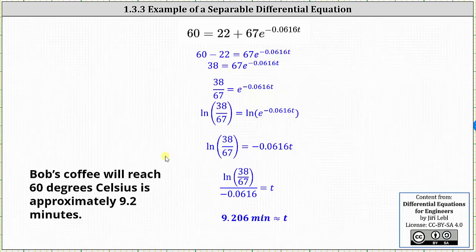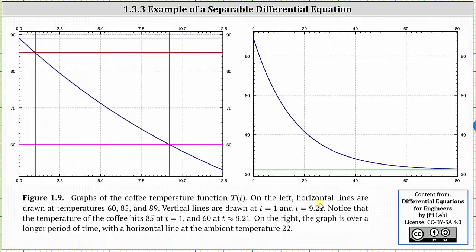Before we go, let's also look at this graphically. In both graphs, the dark blue function is the temperature function big T of t. On the left, horizontal lines are drawn at 60 degrees in pink, 85 degrees in brown, and 89 degrees in green. The vertical lines are drawn at t equals 1 and t equals 9.21. Notice the temperature of the coffee hits 85 degrees at t equals 1 minute, and 60 degrees at approximately 9.21 minutes, which is this intersection point here. On the right, the graph is over a long period of time with a horizontal line at the ambient temperature of 22 degrees Celsius.